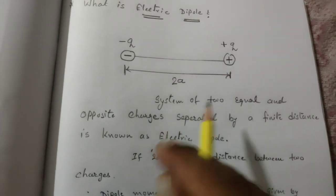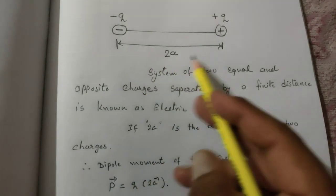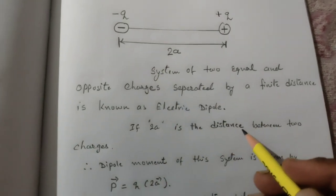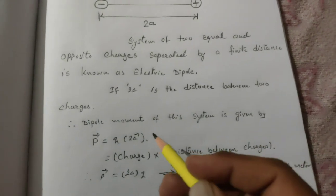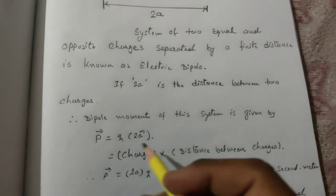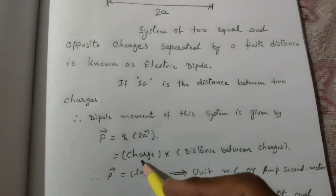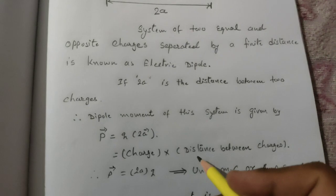Separated by finite distance - finite means it is a countable distance. That whole system is known as electric dipole. Now, over here you can see that we have a separation distance of 2a. Electric dipole moment of this diagram or this charge is defined by p equals charge magnitude of charge multiplied by distance between these two charges.